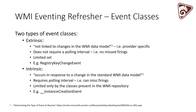I always prefer to go to extrinsic first because I know they will fire, whereas with an intrinsic event — say you want to trigger off process creation using an instance creation event on Win32 Process — there's a chance you might miss it within that polling interval if the process started and stopped within that timeframe. A good example of an extrinsic event would be the registry key change event.